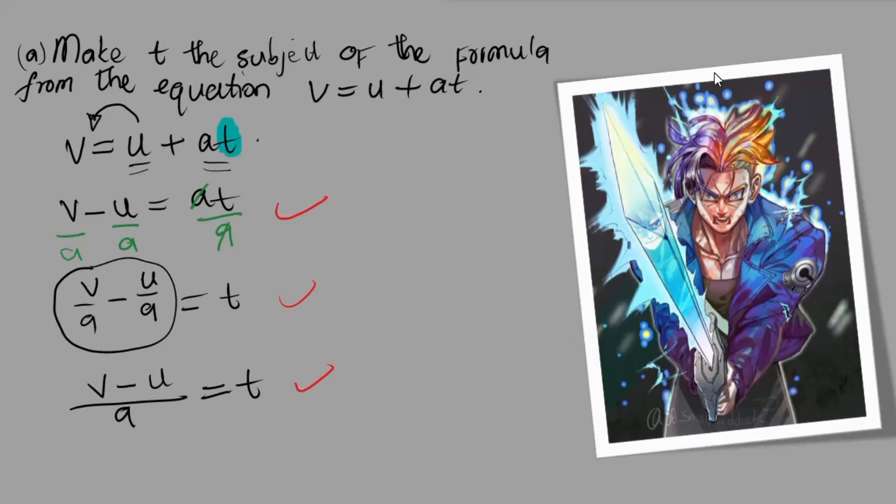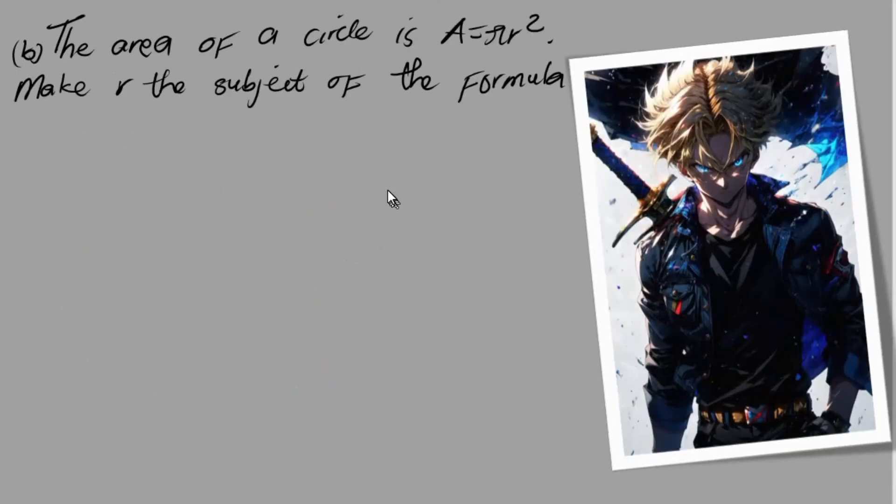The next question says the area of a circle is A = πr². Make r the subject of the formula. Let's write the equation down: A = πr². Pi is a number, so r is attached to pi by multiplication. I'm going to divide this side by pi and this side by pi.